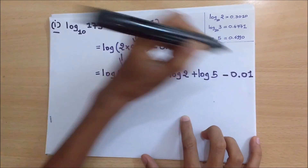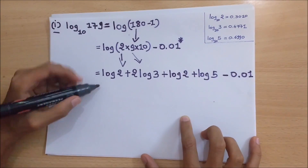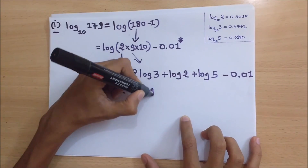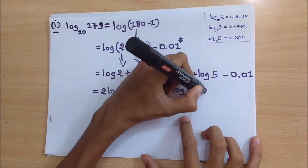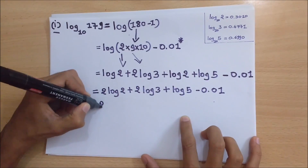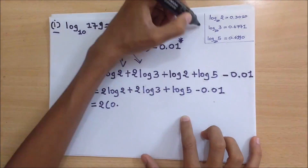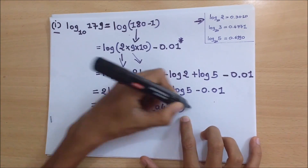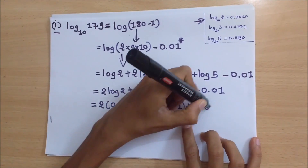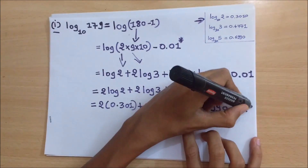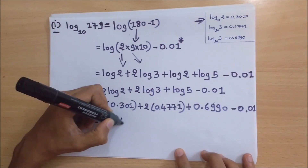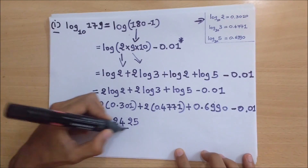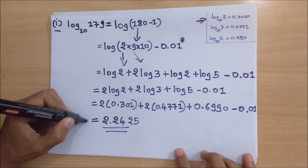At this stage we have turned the question into log values which we have already remembered. Putting those values in, the answer is 2.2425, which is very close to the real accurate value. Remember that this trick is for estimated values — don't use it for accurate calculations.